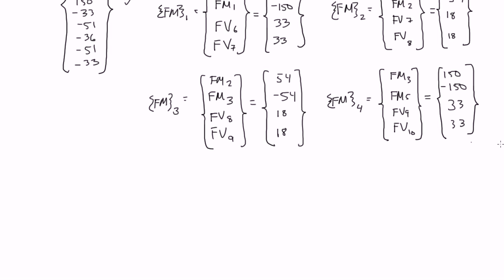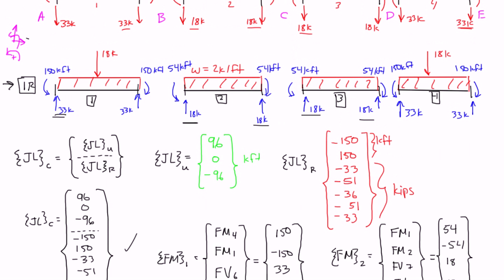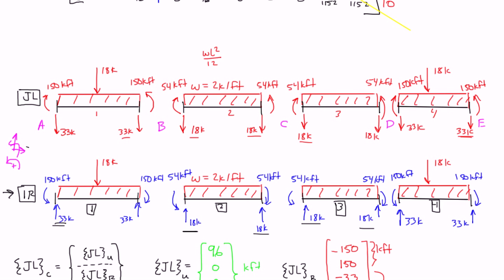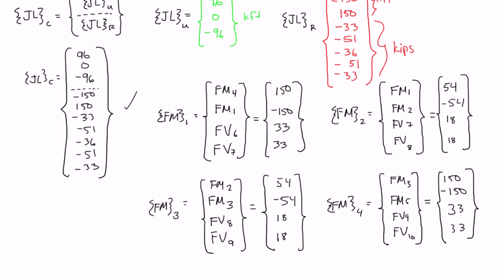So, your fixed moment column vector values are derived from the internal reaction diagram, and your joint load values are derived from the joint load diagram. We've now finished all the matrices we need. In the next couple of videos, we're going to use our three equations to figure out the unrestrained deformations, the reactions at all the supports, and the internal reactions at each of the four elements.